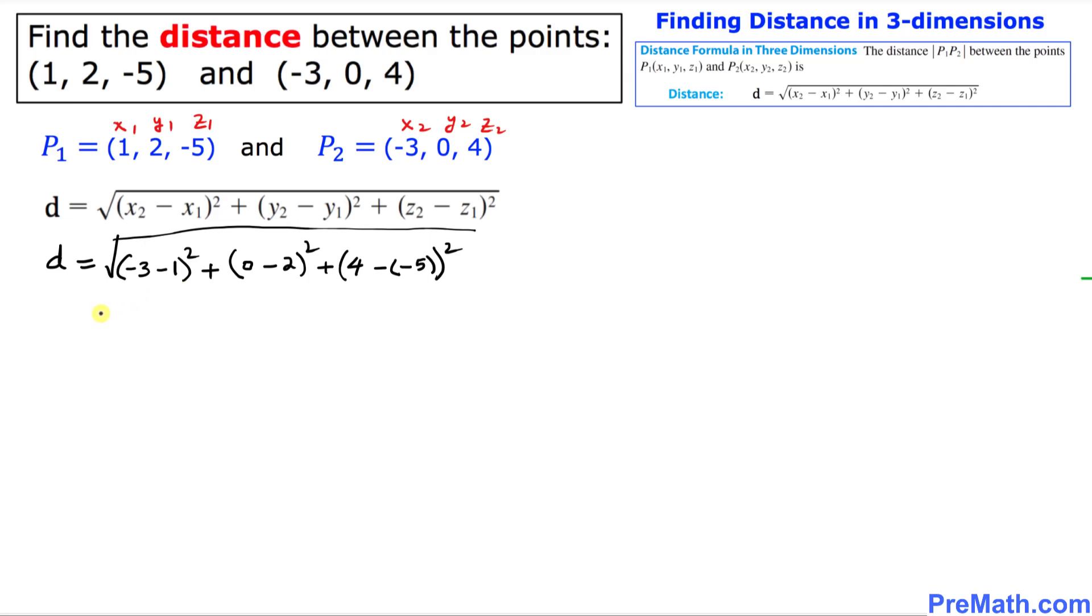Let's simplify furthermore. So we can write this as negative 3 and negative 1 makes negative 4 squared, plus this becomes simply negative 2 squared. And here plus 4 and negative, negative becomes 5 squared.